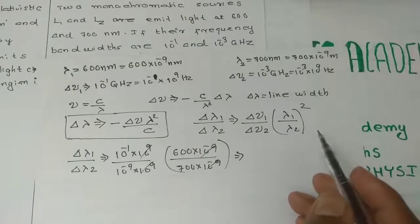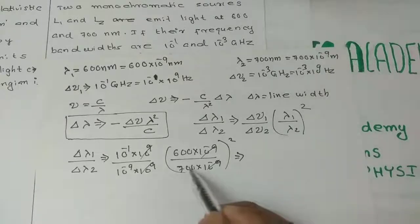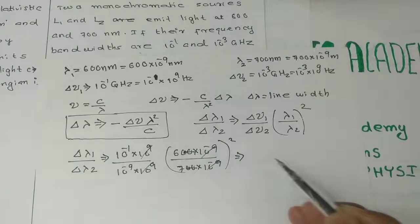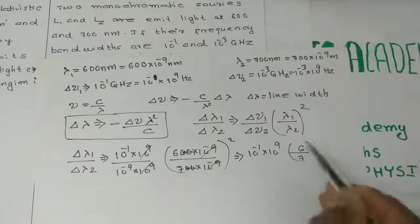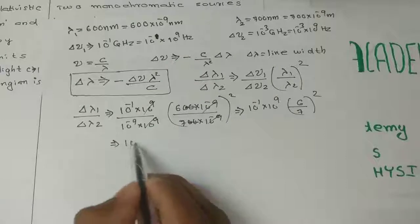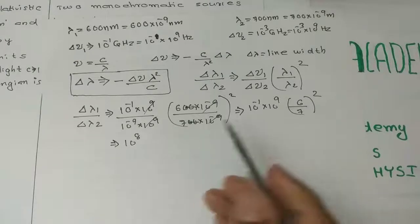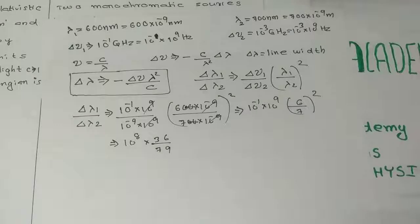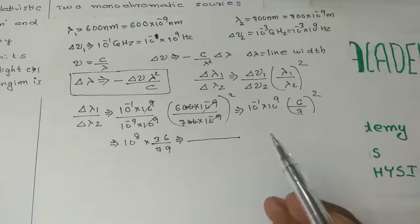Simplifying the expression, we get 10 raised to minus 1 over 10 raised to minus 1, with the wavelength squared ratio giving 6 over 7 all squared. This simplifies to 10 raised to 8, giving the ratio. We substitute and simplify to write the final answer.